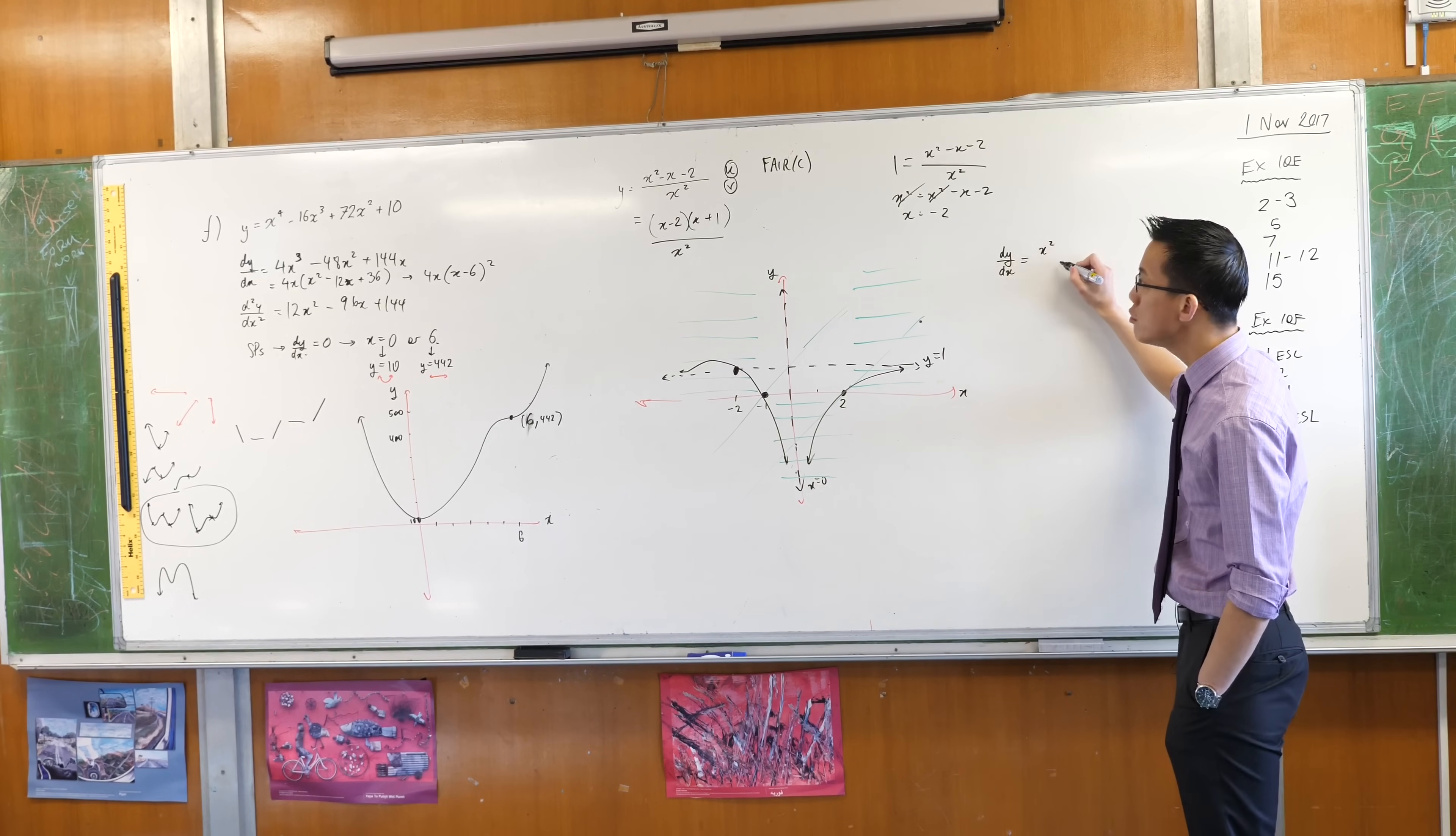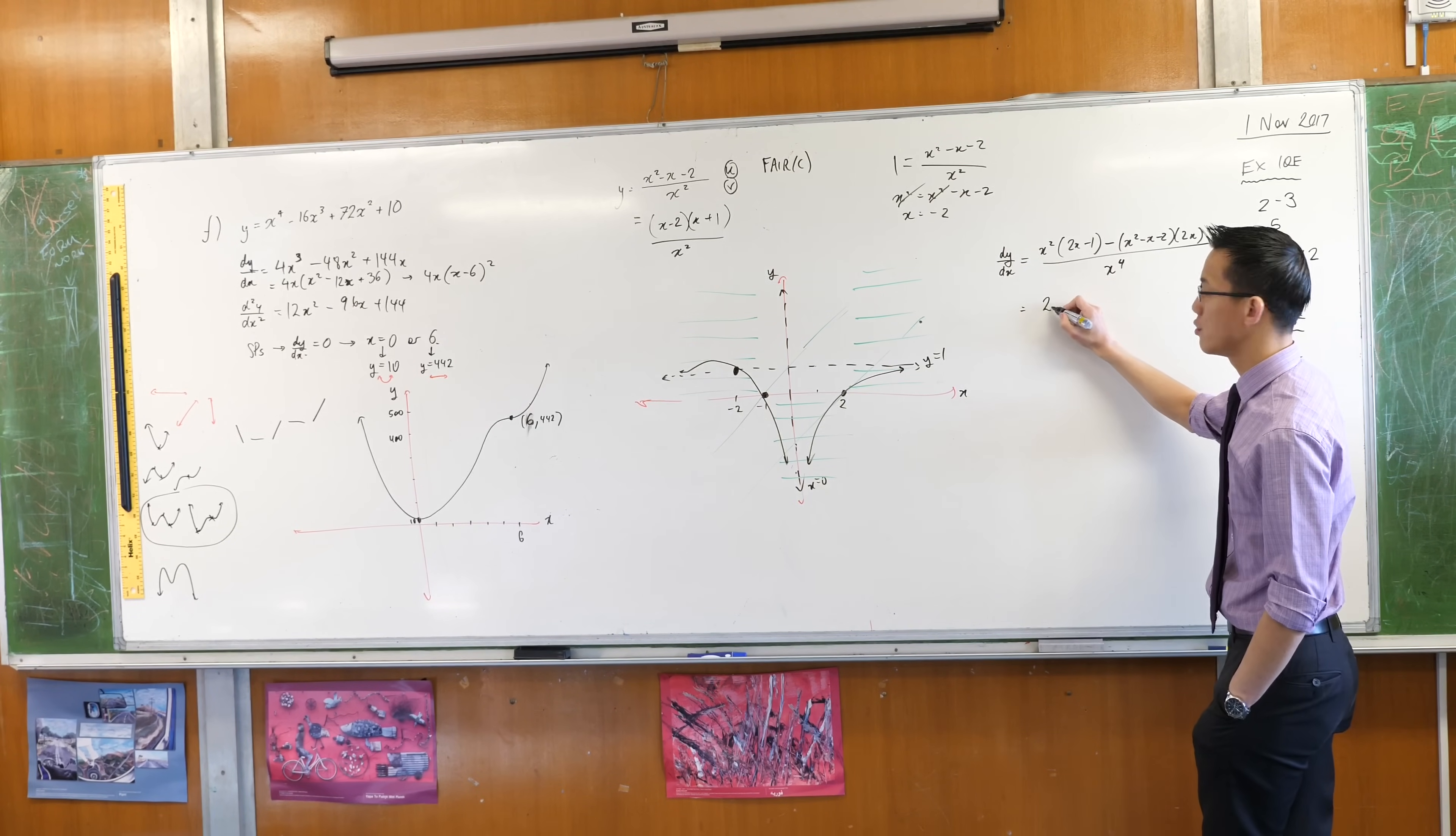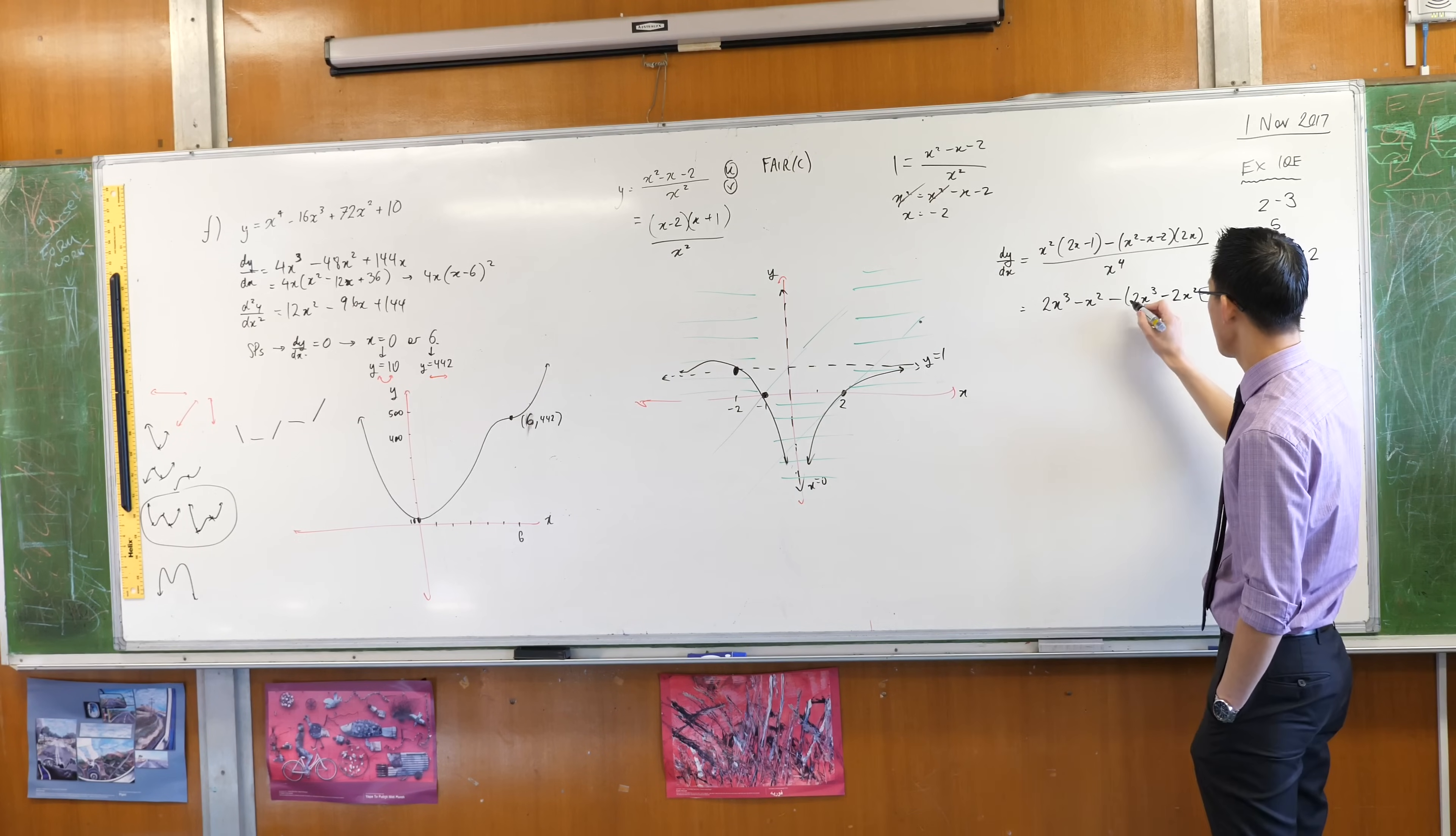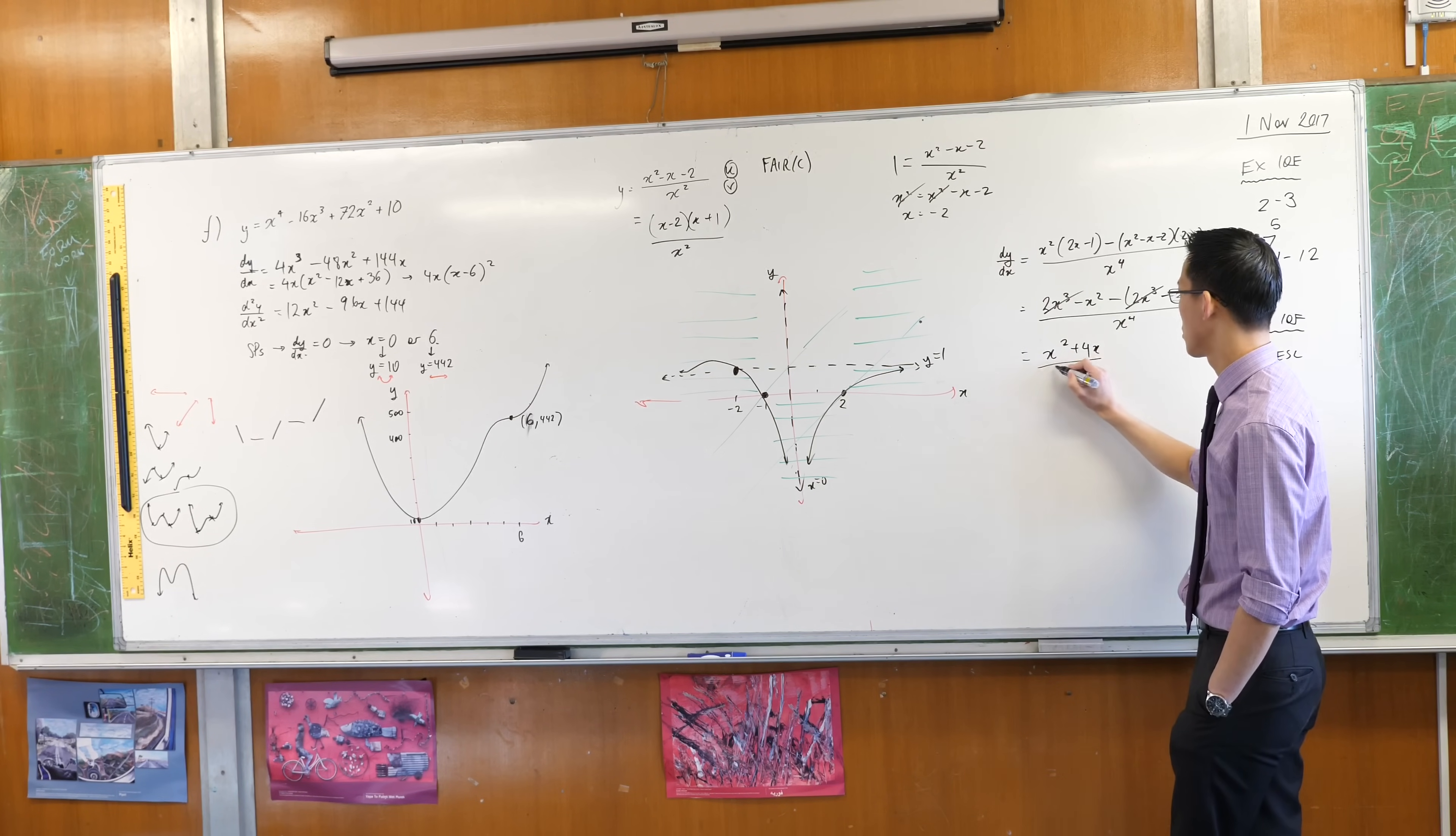So dy/dx. v is x squared. u dash will be 2x minus 1 minus u, x squared minus x minus 2, times v dash, which is 2x. All divided through by x to the 4. Now, this looks like a big garbled mess, but I'm crossing my fingers really hard. I'm hoping it's going to work out. So that's going to give me 2x cubed minus x squared. Watch out for your sign here. I'm not even going to touch it. I'm going to do the expansion first. You're going to get 2x cubed, that's convenient, minus 2x squared minus 4x. So I can see cancel, cancel. I have minus x squared plus 2x squared. So how many x squared are there? Minus 1 plus 2, it's just a single x squared minus minus 4x. That's plus 4x. Probably factorize. X to the 4.